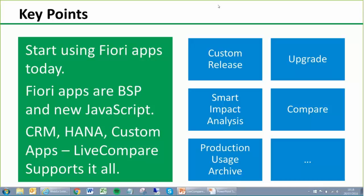Can you shed some light on how to capture the production usage for BSP applications? You don't really have to do anything in your production system. Typically you keep three months by default. Once LifeCompare is installed, you schedule an RFC destination to pull data once a month and collect it. Most of our customers collect 13 months so they have a full year of history available. As for whether you need UPL data — not for BSP, Fiori, or traditional ABAP applications. We do collect it and use it for specific impact analysis on extended warehouse management, EWM, but out of the box the smart impact analysis does not need it.